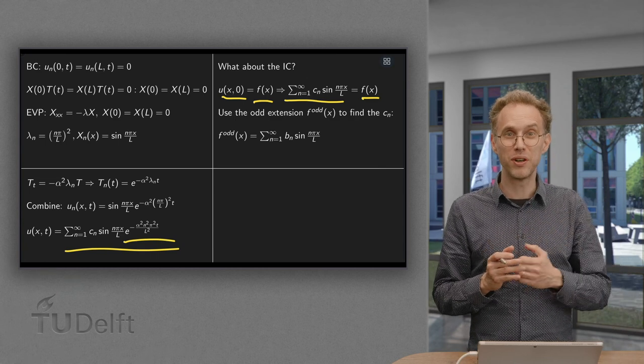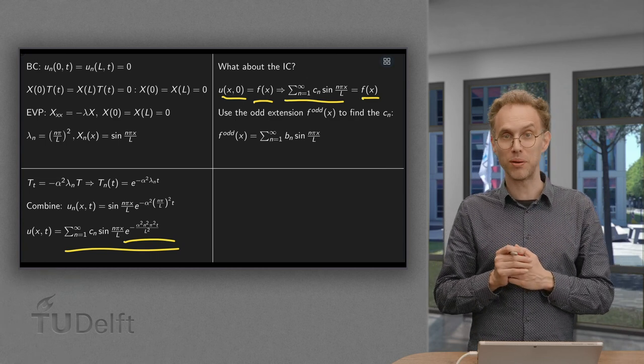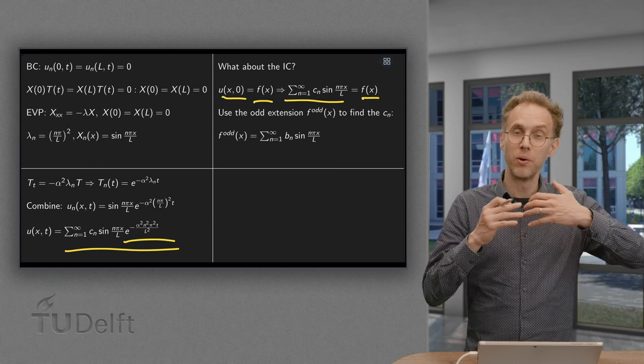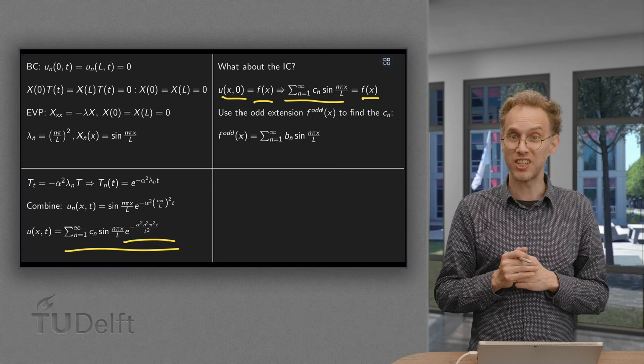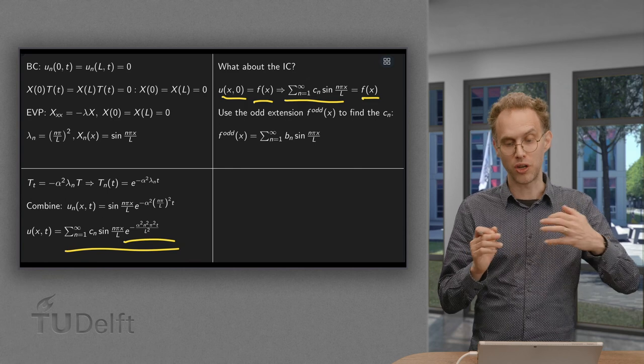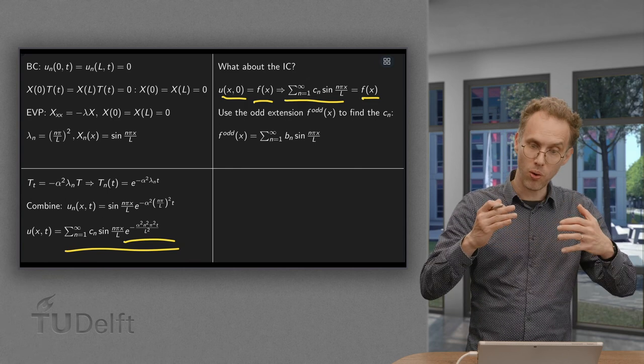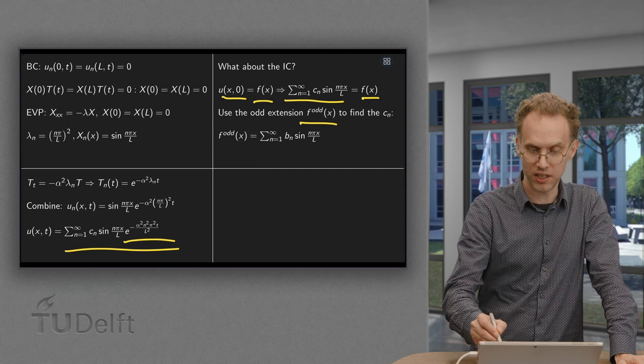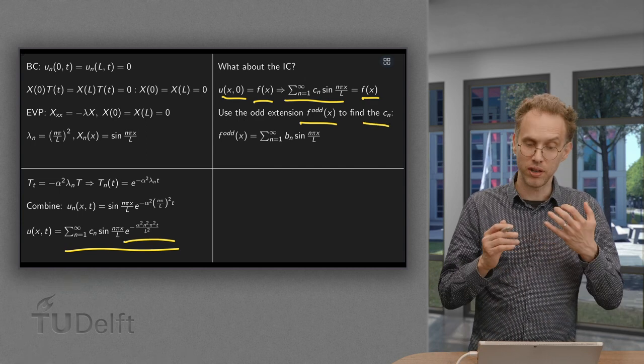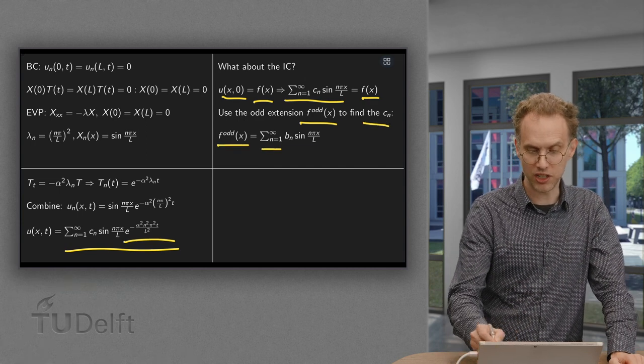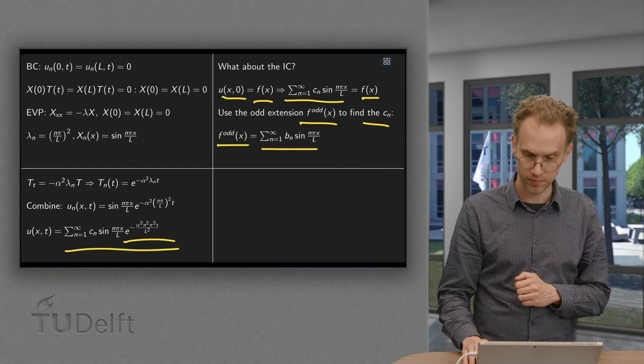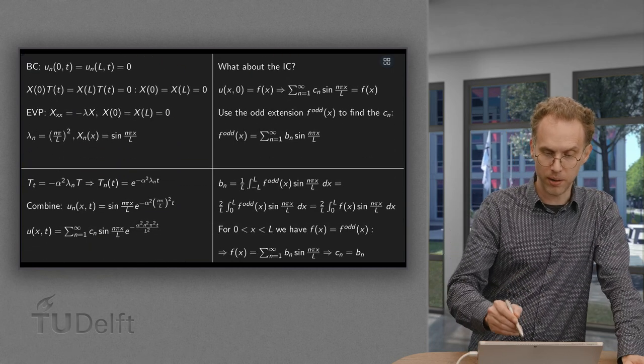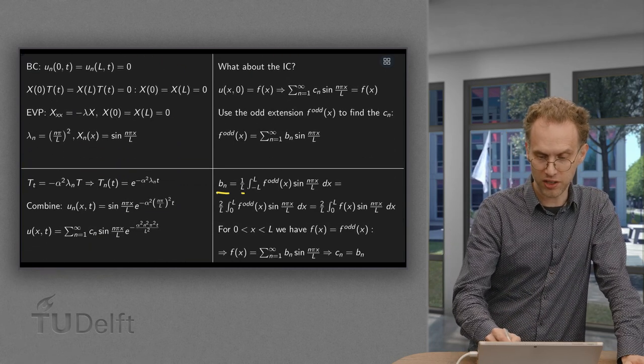And now we see that we in fact want to express f of X in terms of sines. So we need the Fourier sine series of f of X. So what can we do? We use the odd extension of f of X to find the CN. So the odd extension has a Fourier sine series where the b n are given by the familiar integral over here.